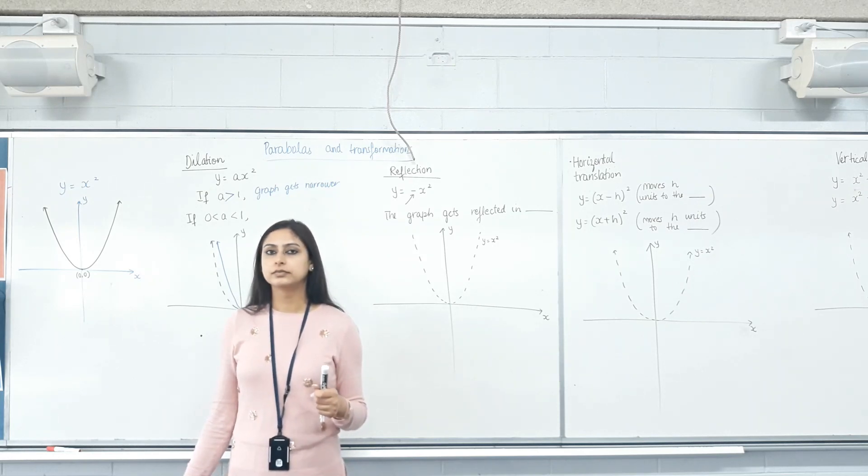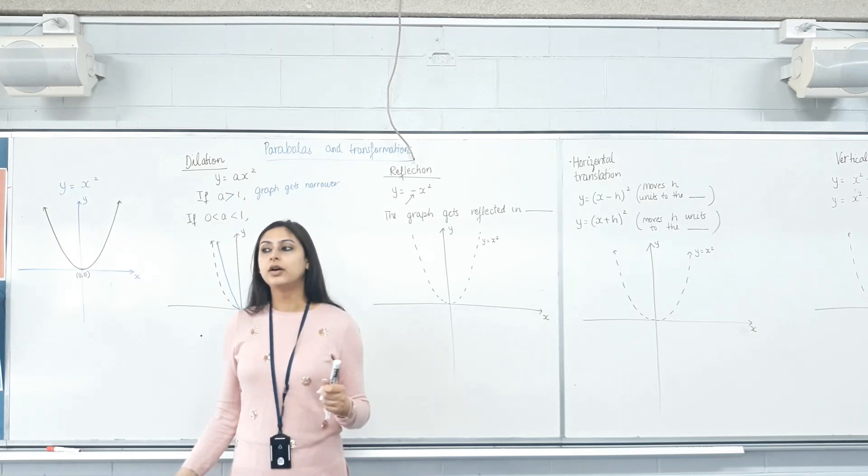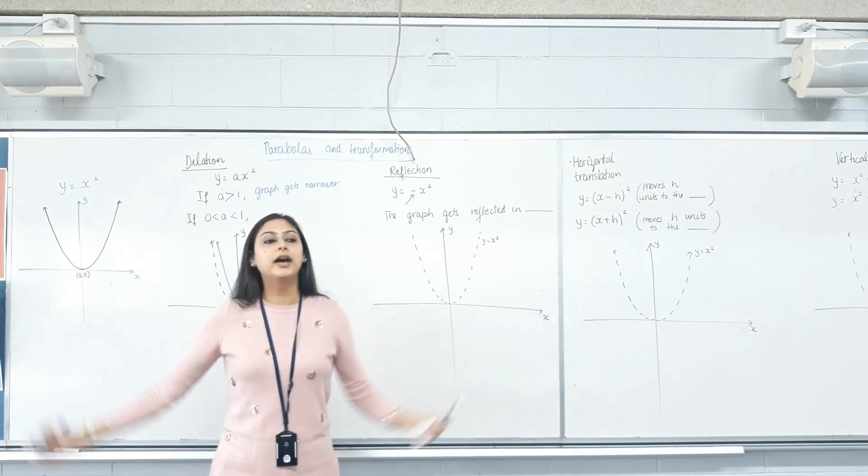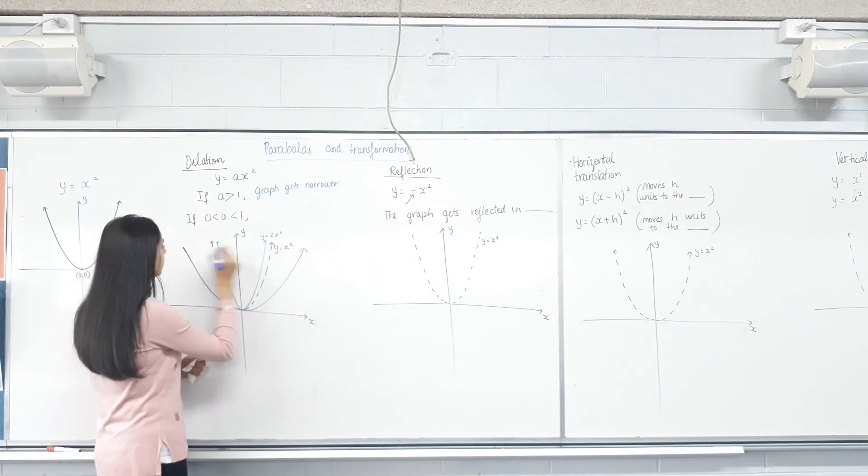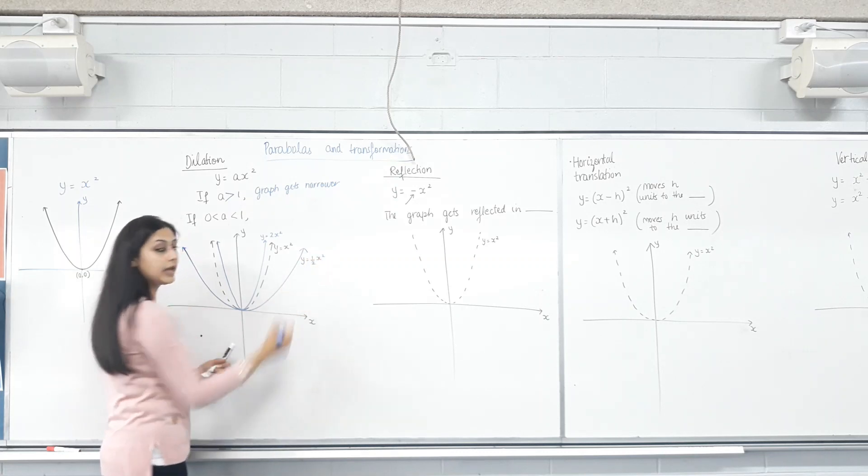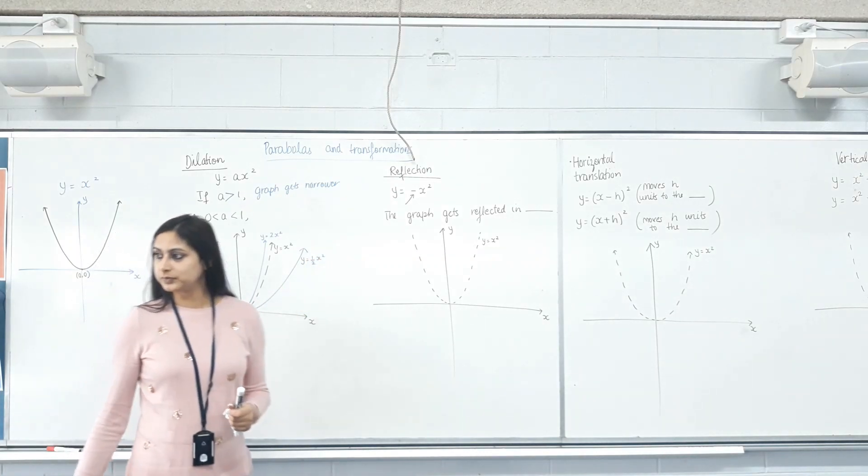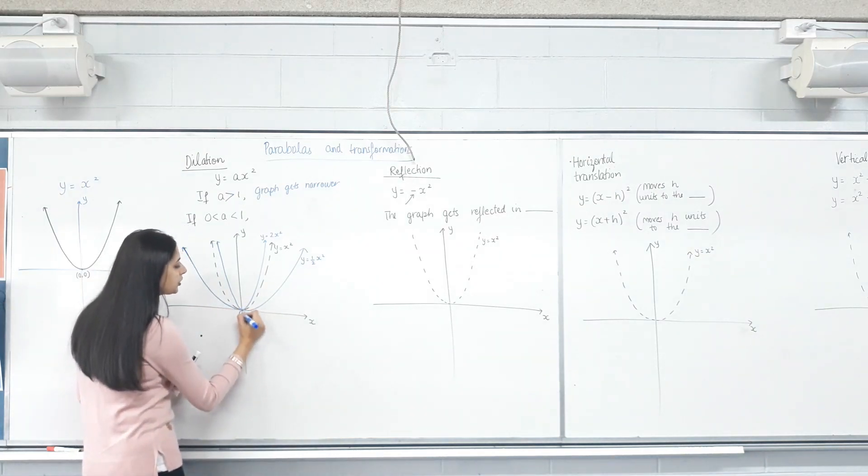What happened? Do you want to explain it? The graph became wider. Wider. So did this happen? Yeah, that happened. And it turned brown. Yeah, the colours are so that you can differentiate. Now, did the turning point change?